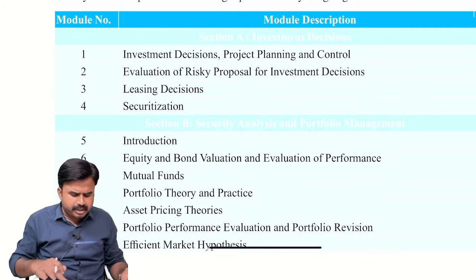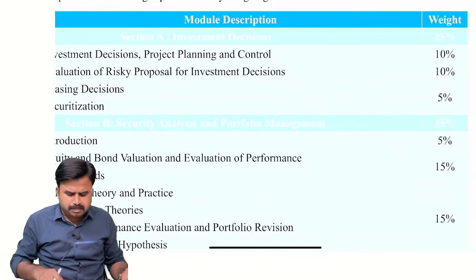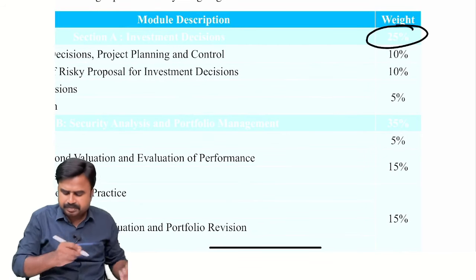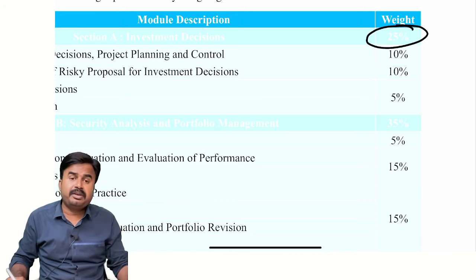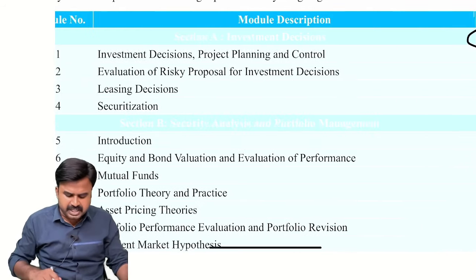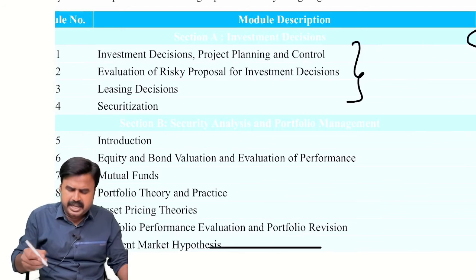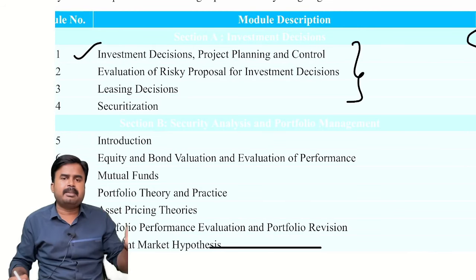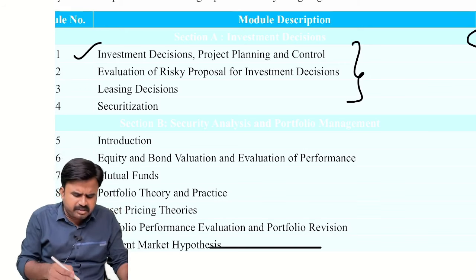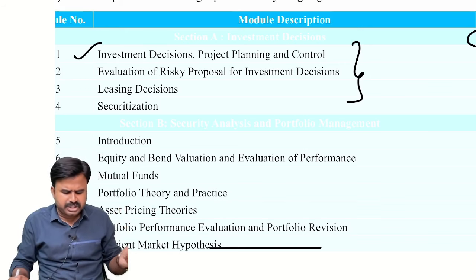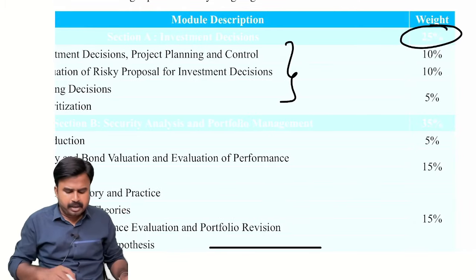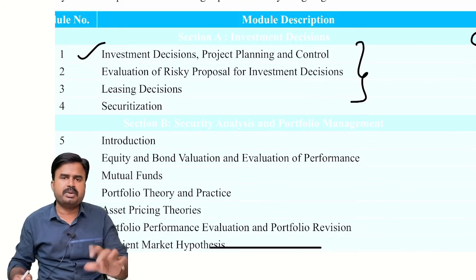The first part — Investment Decisions — covers nearly 25% of the marks, so out of 100 we get 25 marks for these topics. These are very familiar and easy topics. One topic is already covered at CMA Inter Level, so you can easily handle it. Evaluation of Risky Proposals and Leasing Decisions are also easy topics. You can easily get 25 out of 100 by preparing Section A — Investment Decisions.